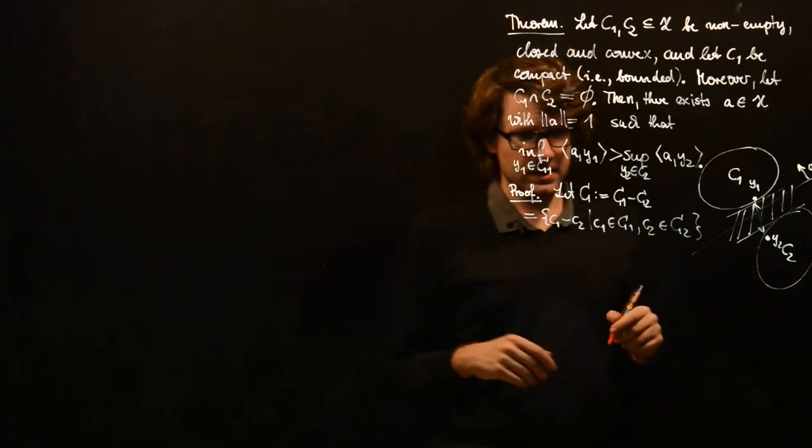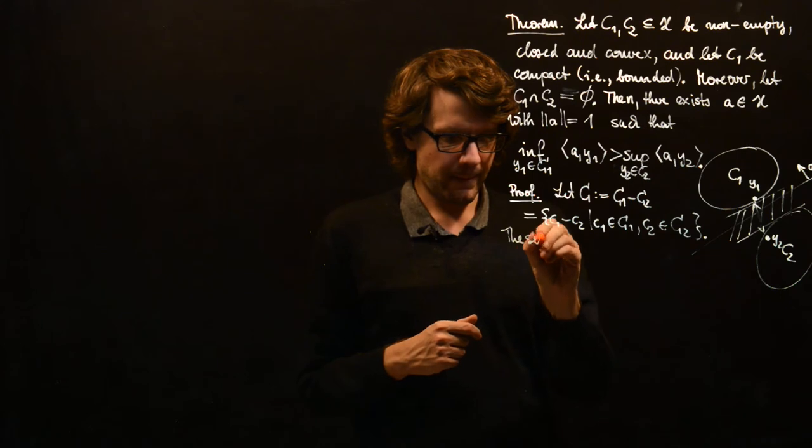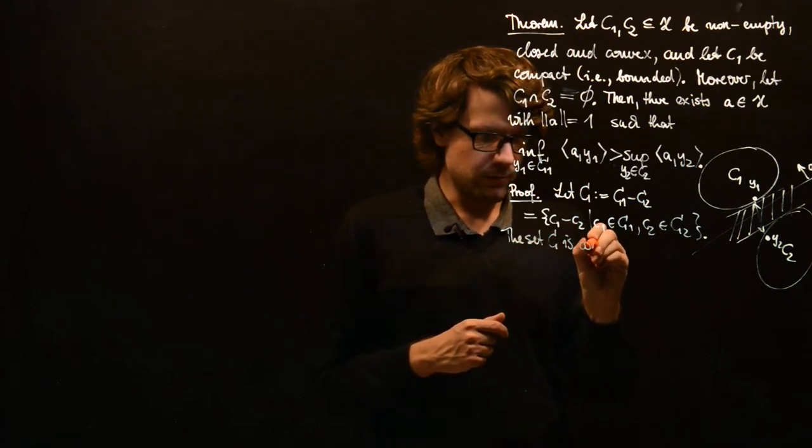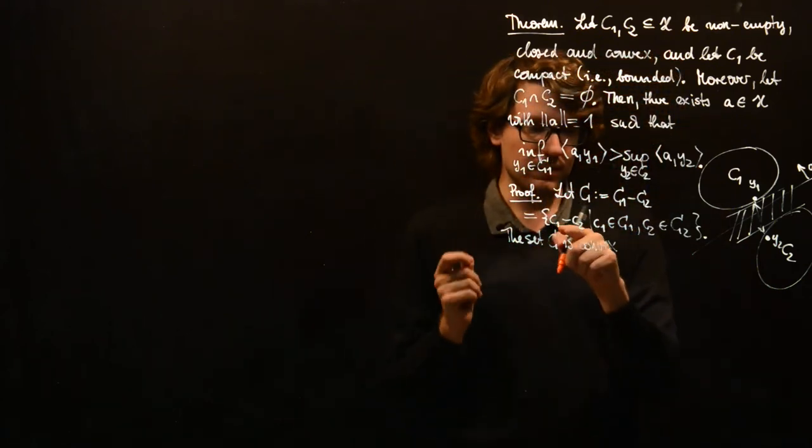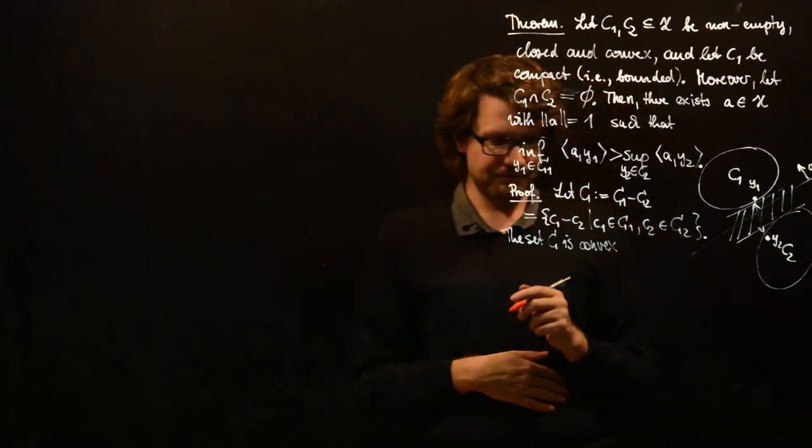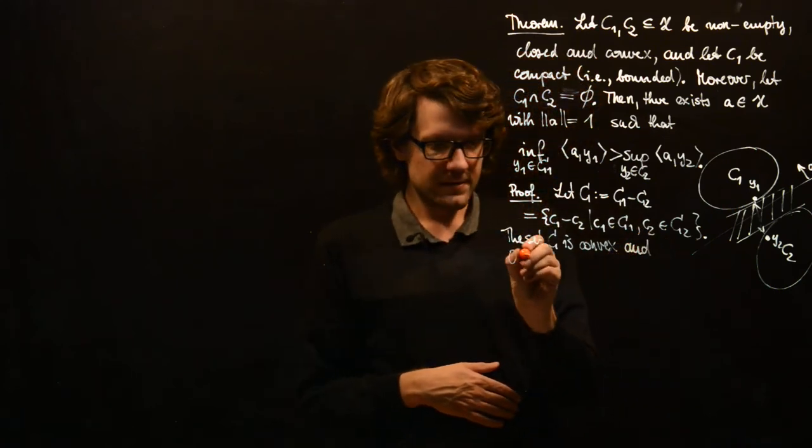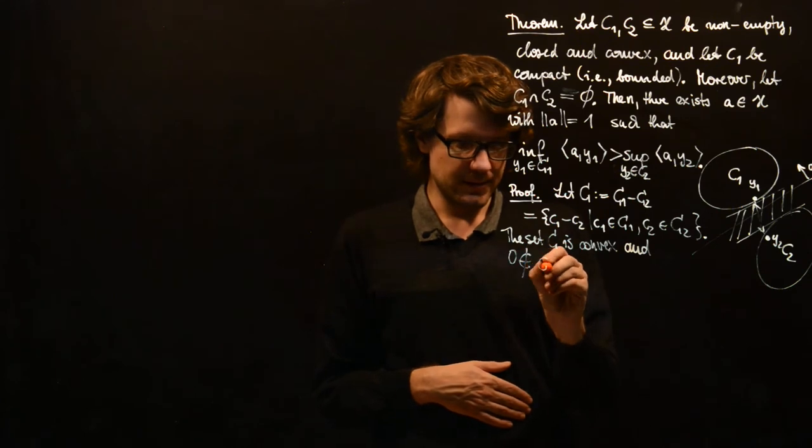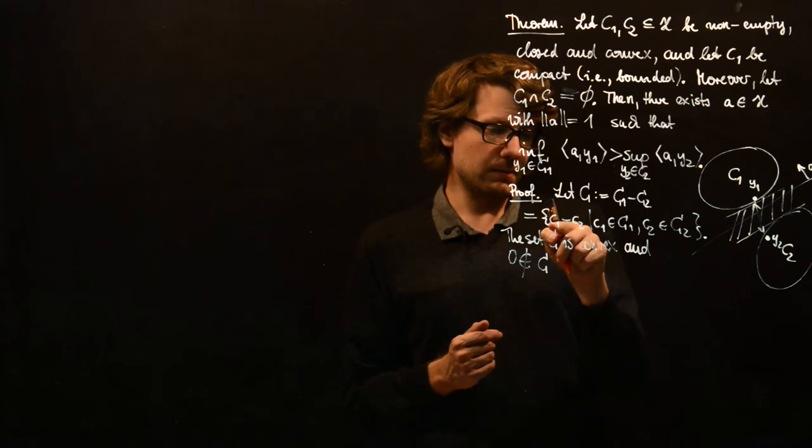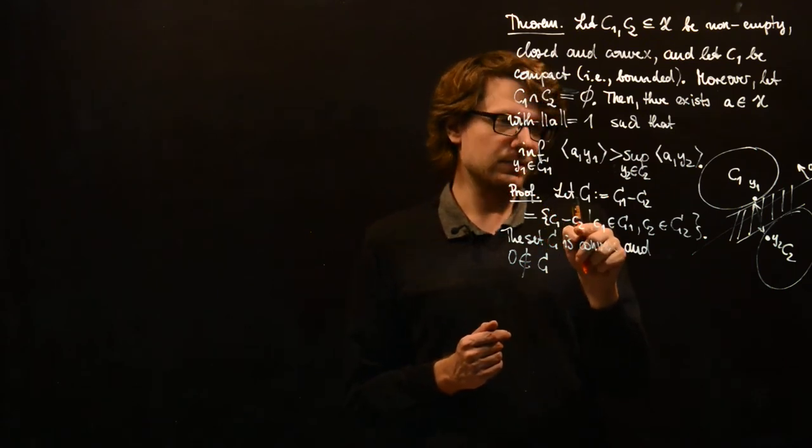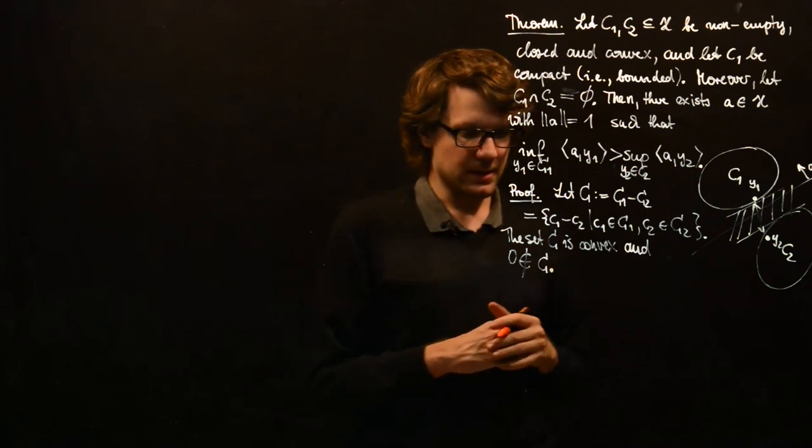And analogously to the Minkowski sum, this set is convex. I won't prove this here, but we have shown that the Minkowski sum of two sets is convex. And this is the Minkowski sum of C1 and minus C2. And we have zero is not in the set C. Why is that? Well, if we had zero in the set C, then there would be some common point C1 equals C2. And this is forbidden by our assumption here. So zero is not in C.